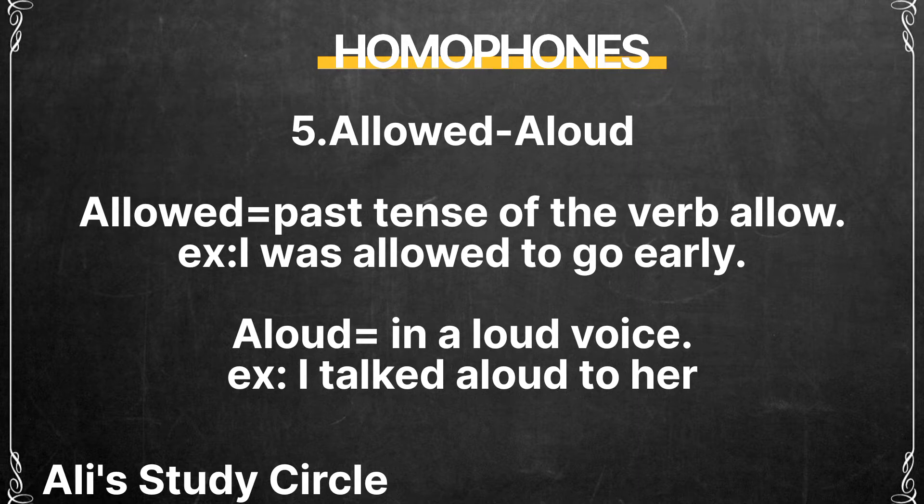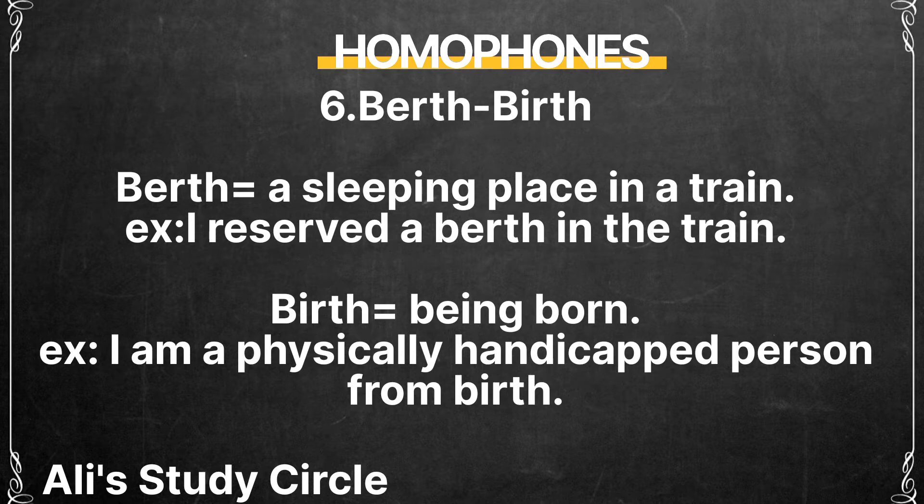The next pair is 'allowed' and 'aloud.' 'Allowed' is the past tense of the verb allow — for example, 'I was allowed to go early.' 'Aloud' means in a loud voice — for example, 'I talked aloud to her.'